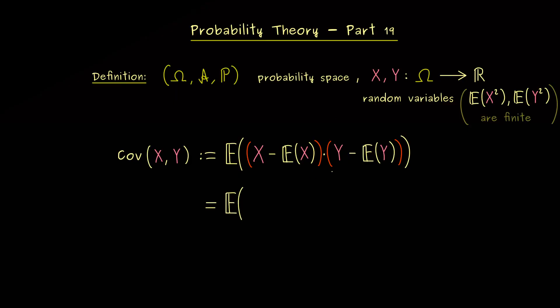This means, we just expand this product here. So we get X times Y minus X times the expectation of Y. And similarly, minus Y times the expectation of X. And finally, the last term would be plus the two expectations multiplied. So you see, indeed the same calculation as in part 16.